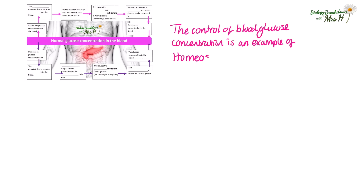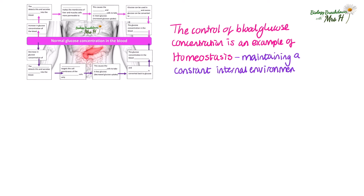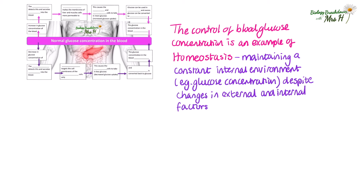The control of blood glucose concentration is an example of homeostasis. Homeostasis is the maintenance of a constant internal environment — in this case, glucose concentration in the blood — despite changes in external and internal factors. I've put brackets around external changes because for glucose control it's only the internal changes of blood glucose concentration that have an effect. If we were talking about homeostasis of body temperature, for example, then the external temperature would obviously have an effect.